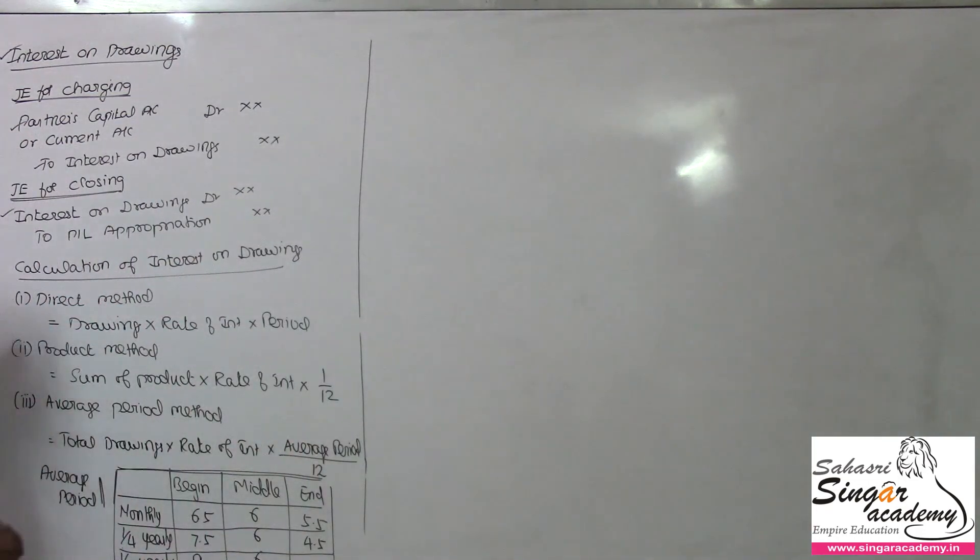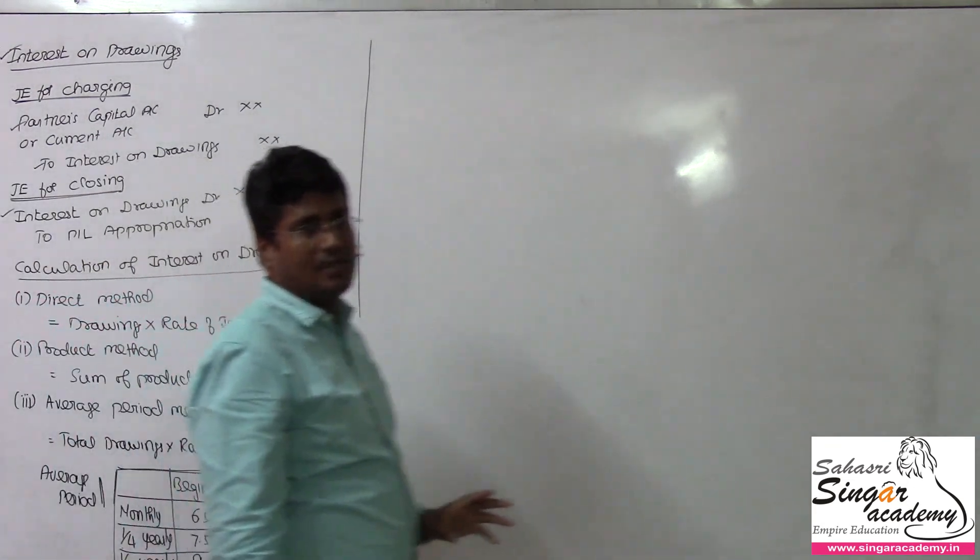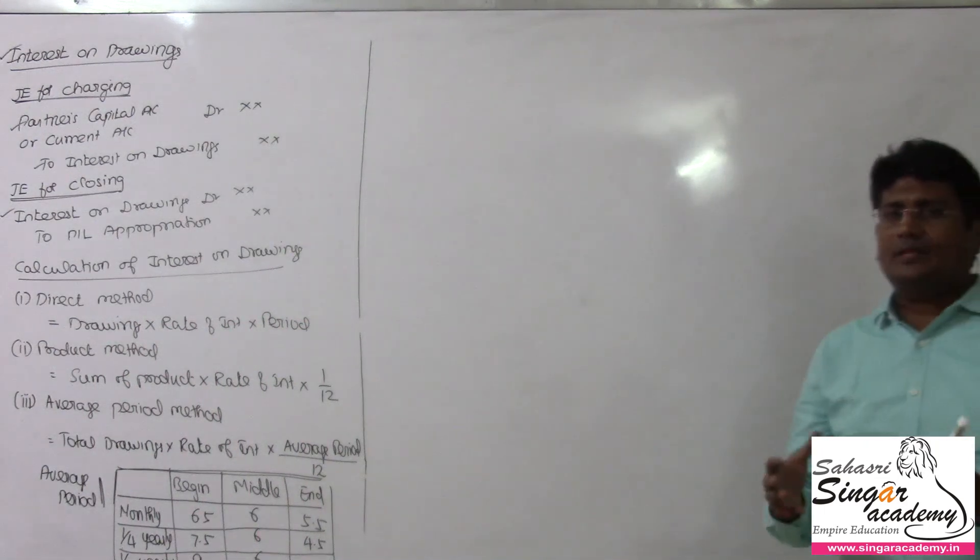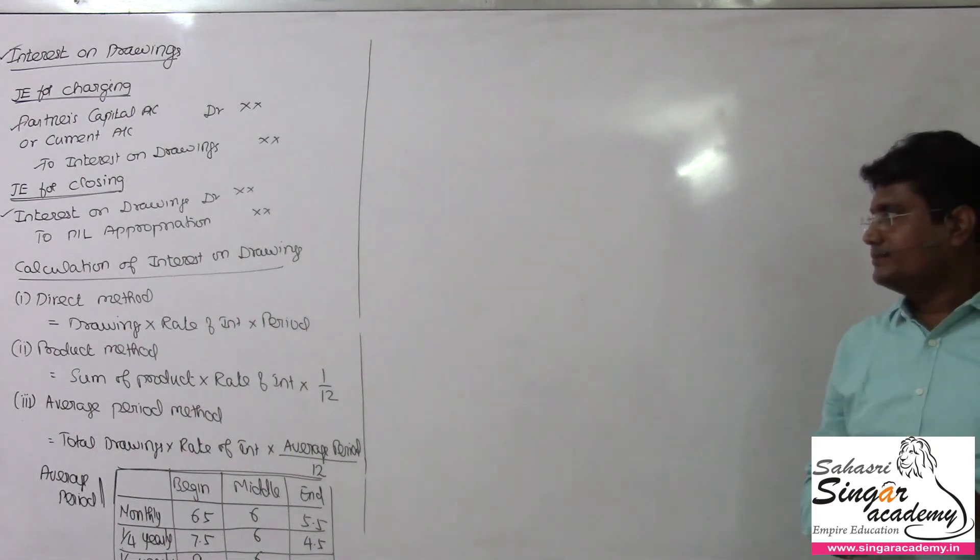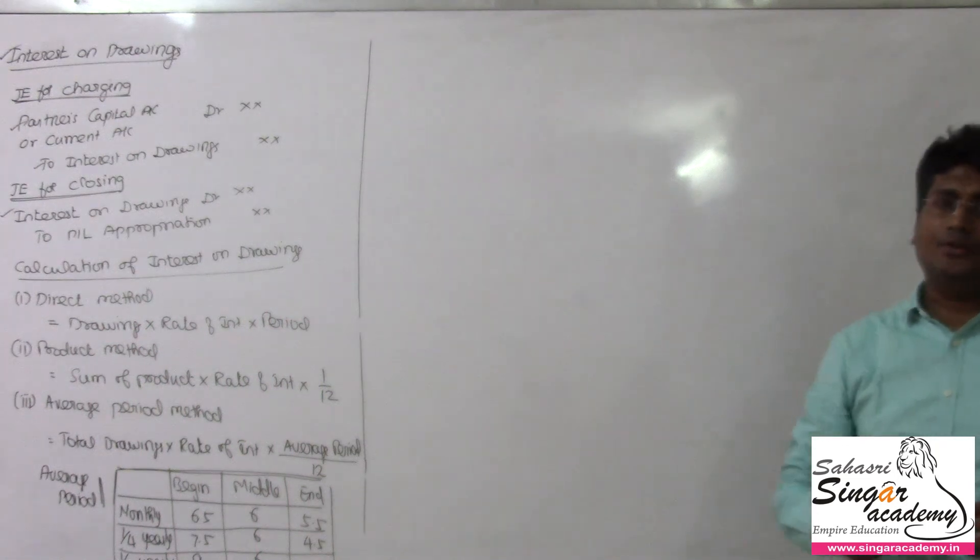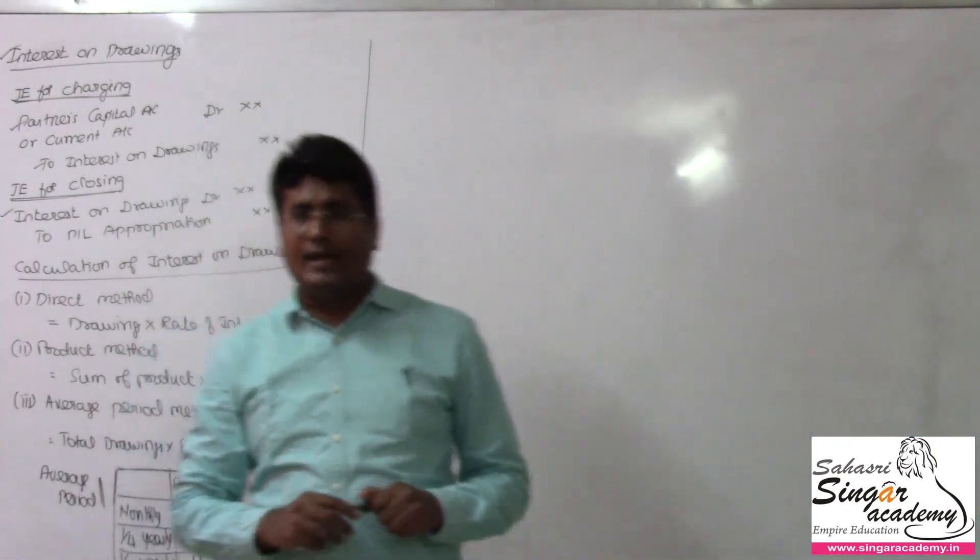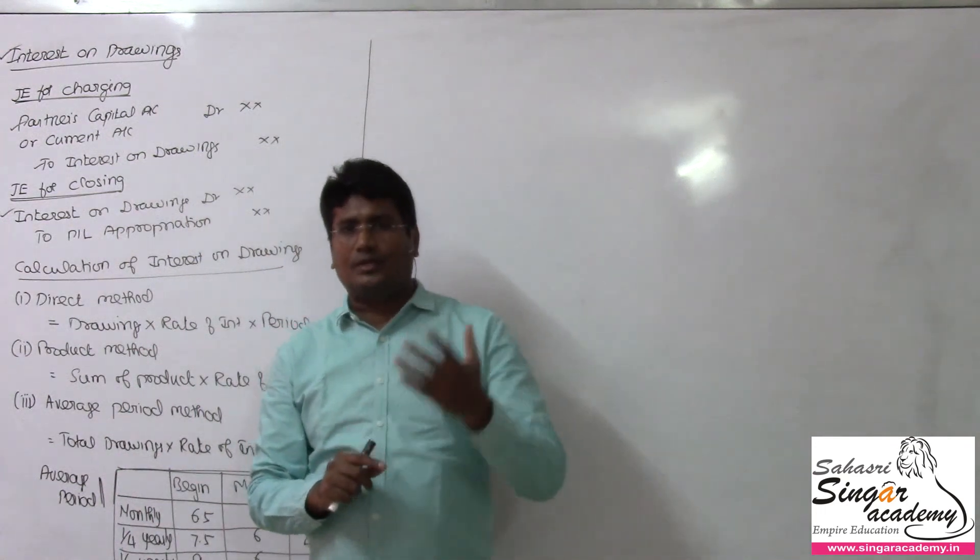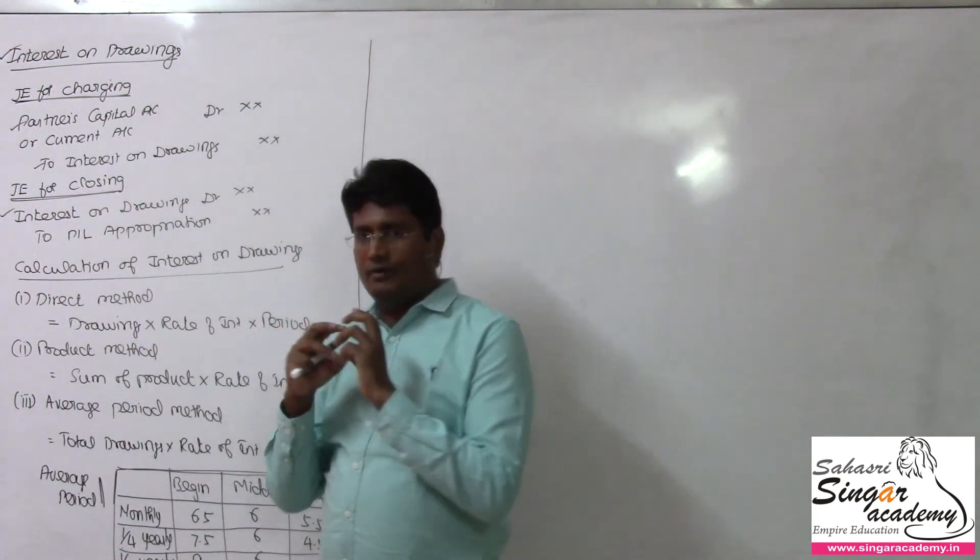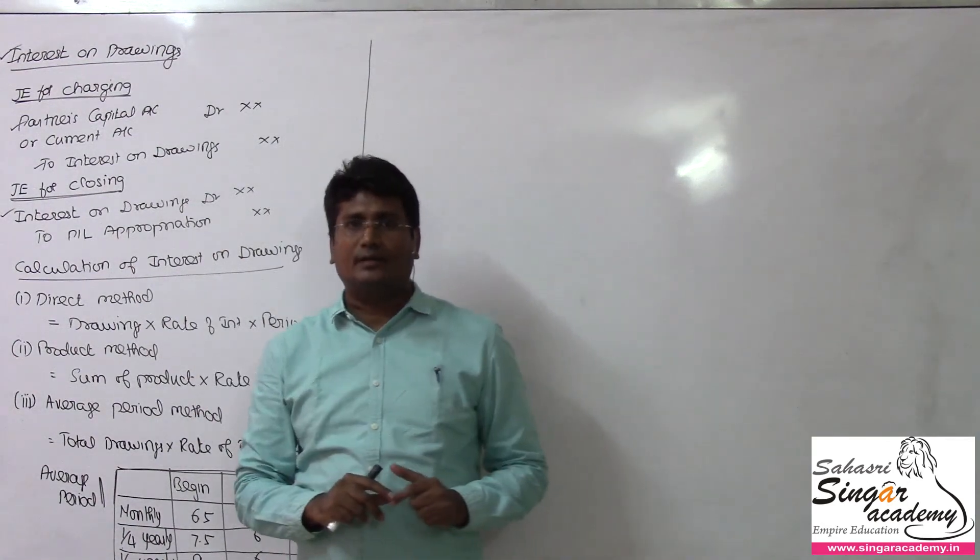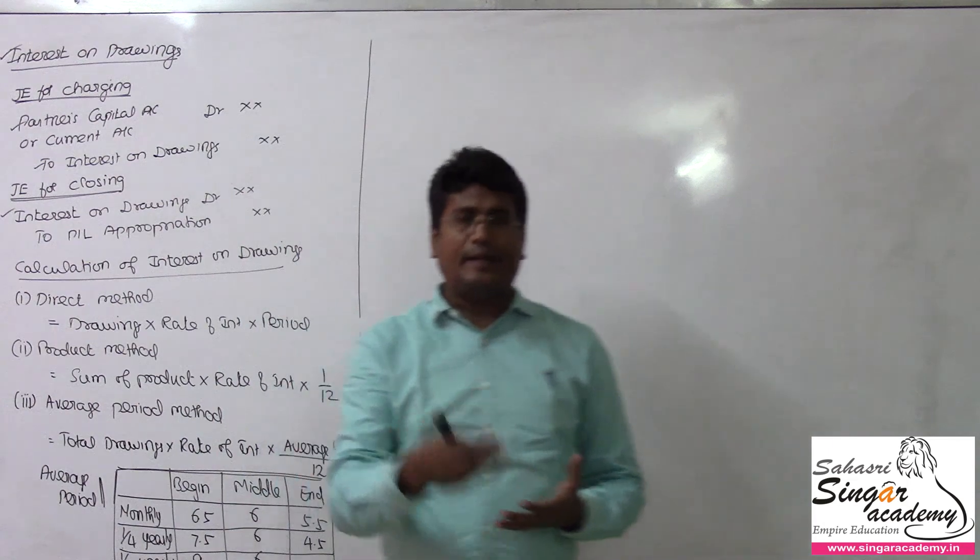Calculation of interest on drawings: direct method, product method, or average period method. Direct method you can usually use. Product method is a little bit more complex. But for your plus two level, very basic direct summary. Variations are available in later class.